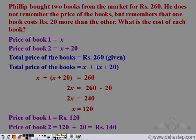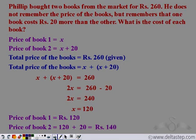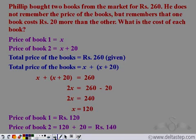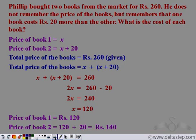So the price of book one is Rs. 120 and the price of book two is Rs. 140. We can verify: 120 plus 140 equals 260, satisfying the total price condition. And indeed, one book costs Rs. 20 more than the other. Both conditions are satisfied, so Rs. 120 and Rs. 140 are the correct prices for the two books.